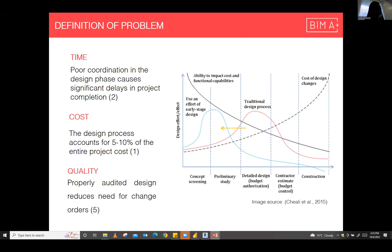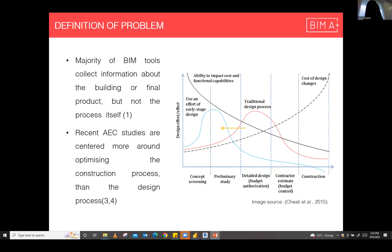The readings I did showed that when it came to time, there's a significant delay caused in project completion when the design phase is not properly managed, and that the design process actually accounts for five to ten percent of the entire project cost. Properly auditing a design would reduce the need for change orders at the construction phase. But in spite of this knowledge and research, most of the BIM tools focus on optimizing progress monitoring and scheduling at the construction phase and neglect the design phase.